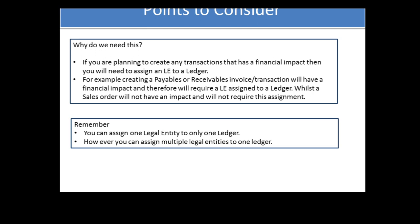Remember, you can assign only one legal entity to one ledger. For example, you have the US ledger and the US legal entity — you can assign the US legal entity to the US ledger only; you cannot assign the same legal entity to another ledger. However, under one ledger you can have multiple legal entities, but the same ones cannot be assigned to different ledgers.